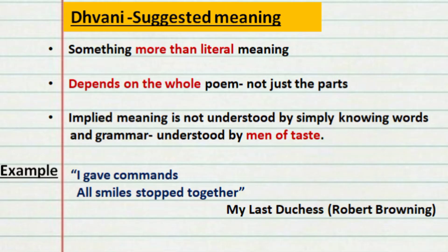Dhvani is the suggested meaning — something more than the literal meaning. As told earlier, the boy who lives in the library: the literal meaning is merely that the boy lives in the library, but the suggested or implied meaning is that he is someone who loves to read. Dhvani depends on the whole poem and not just parts. The Dhvani of a poem cannot be understood by reading one or two lines; you can understand the suggested meaning only when you go through the entire poem.